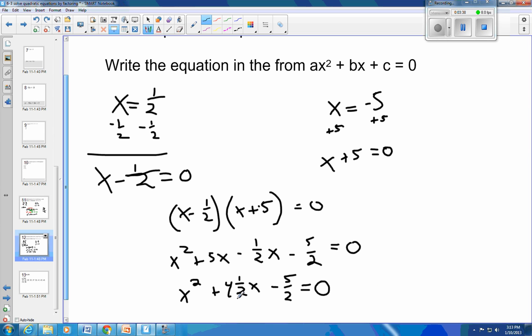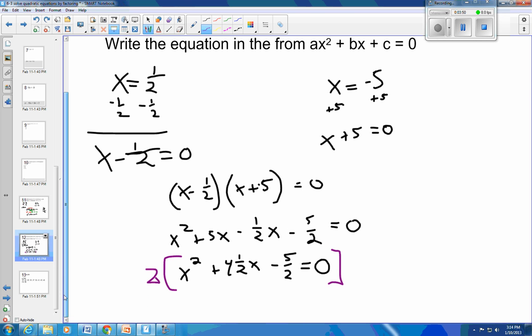If you don't like the fractions in there, you are free to multiply both sides by the common denominator. So I could, in fact, multiply this by a 2. And that would get rid of my denominator. So this would become 2x squared. And 4 halves times 2 would be 9. So that would be 9x. And 2 times negative 5 halves would be negative 5 equals 0. And that would be a very acceptable answer there. Sometimes this is the accepted answer, the answer without the fractions in it.